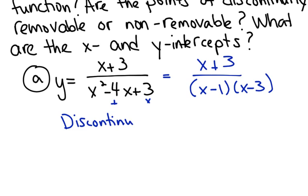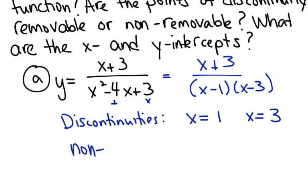So the discontinuities: if x equals 1, you get 0 in the denominator, and if x equals 3, the denominator will also be 0. Those are two discontinuities, and they are non-removable. The reason they're non-removable is because you cannot do any canceling. If you can cancel a factor from numerator and denominator because they match, it's removable; if not, it's non-removable.